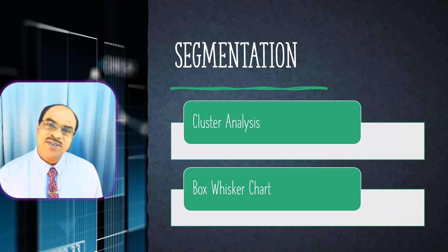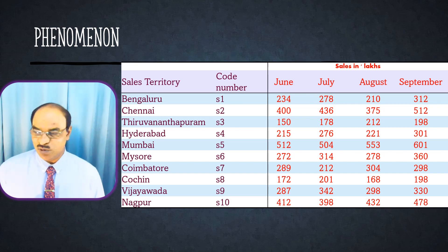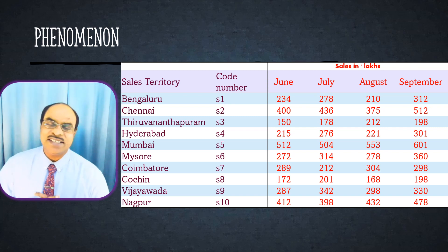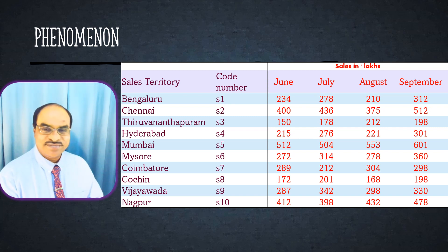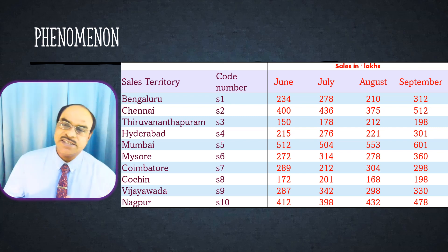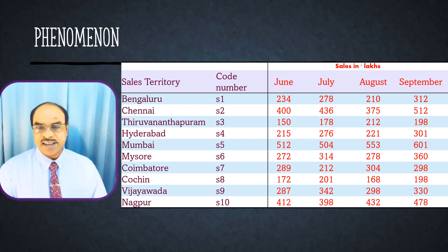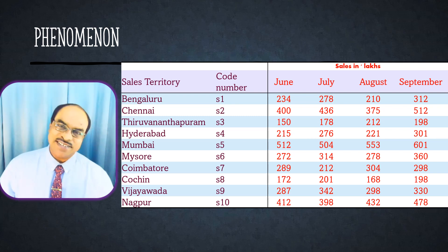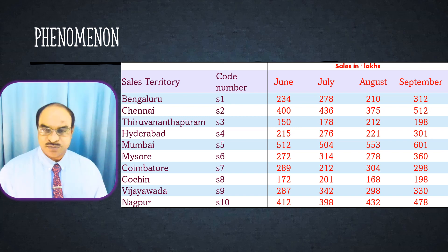Cluster analysis is used for the purpose of segmentation. Let us see a simple example from the marketing world. Here I am showing a simple table — there are ten sales territories in a company, and each sales territory is selling different products from the same company. I have listed the sales in lakhs for the last four months: June, July, August, September. We have selected around ten cities from South India — Bangalore, Chennai, Thiruvananthapuram, Hyderabad, Mumbai, Mysore, Coimbatore, Kochi, Vijayawada, and Nagpur.